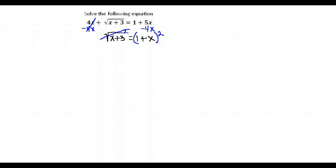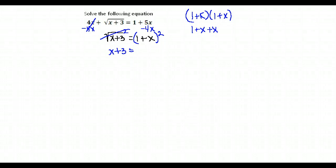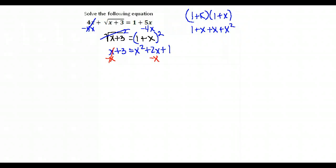Squaring over here on the right-hand side, that would mean 1 plus x times itself, which gives me 1 plus x plus x plus x squared, or x squared plus 2x plus 1. I notice again I have x squared's and x's. To solve that, I have to either factor or use the quadratic formula. To do that, it has to be equal to 0, so I move everything to one side. Subtract the x and subtract the 3, and I have 0 equals x squared plus x minus 2.